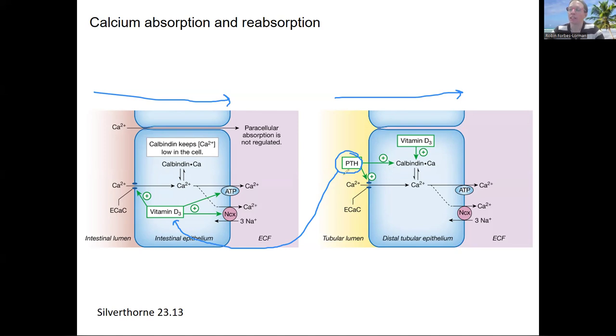Similarly, PTH is one of the signals for vitamin D that then has the same exact effect that we have these additional membrane proteins being put in the membrane. So in both of these cases, a similar process is happening. We've got calcium channels on the apical surface. So that would be here, apical surface, label that apical surface.